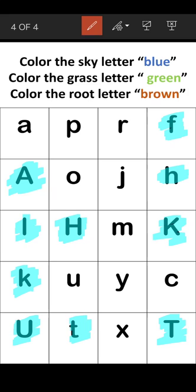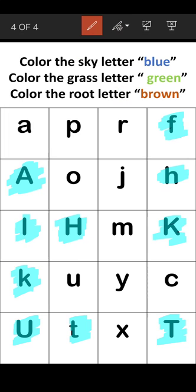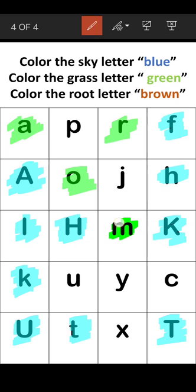Now let's find the Grass letters — the letters which come in the middle two lines. The Grass letters here are: A, R, O, M, U, C, and X.